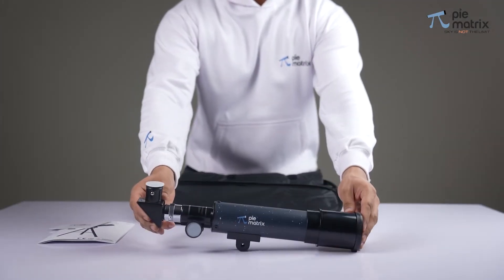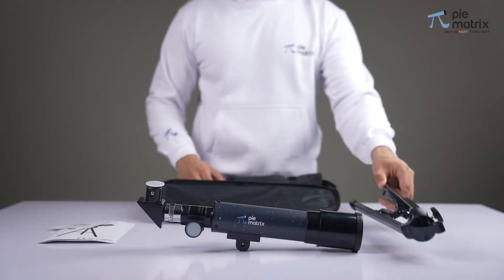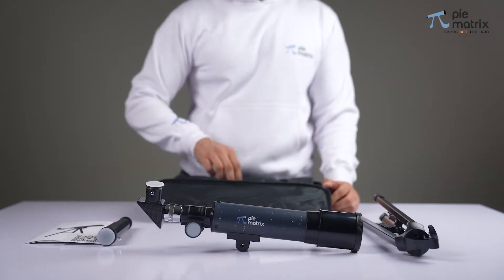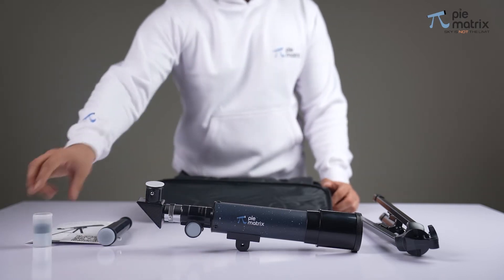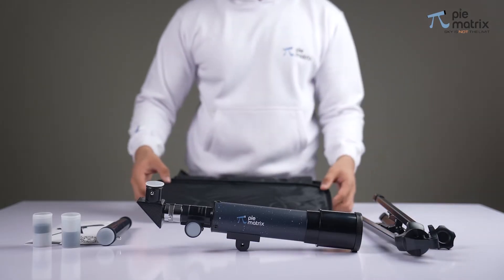The optical tube assembly, the tripod on which the tube is mounted, the erecting eyepiece, followed by a set of two additional eyepieces and an altitude lock knob.